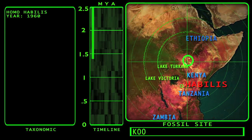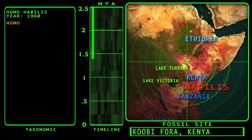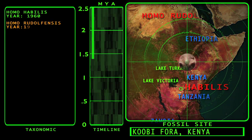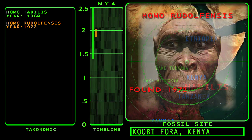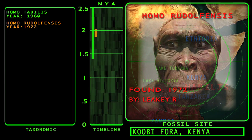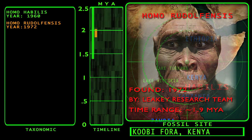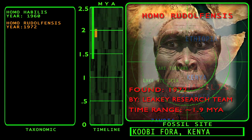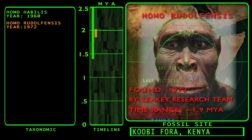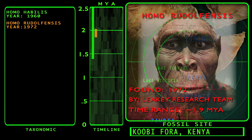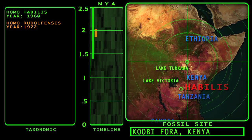Going down the timeline, we would next encounter Homo rudolfensis. The fossils of Rudolfensis were discovered in 1972 on the east side of Lake Turkana in Kenya by a research team led by Richard and Meave Leakey. The estimated age of Rudolfensis is 1.9 million years in the past.